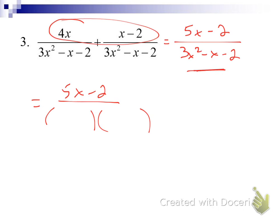The numerator can't be factored — there's no greatest common factor and it's not a quadratic. For 3x² minus x minus 2, we factor it into (3x + 2)(x − 1). The smile gives 2x and negative 3x, which add to −1, and 2 times −1 is −2 — that works. We look for common factors to divide out, and it turns out we can't reduce it, but we have to check anyway.